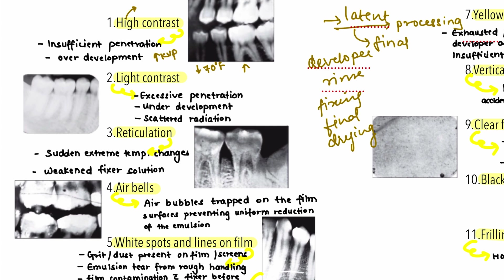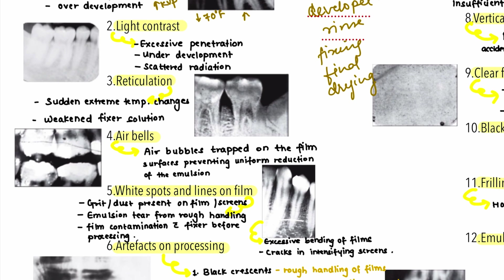The next radiographic error is reticulation — an orange peel appearance on the radiograph. It can be caused by sudden extreme temperature changes during processing, so you need to maintain a consistent processing temperature. If the fixer solution is weakened, that can also produce this orange peel appearance, and the correction is to replace the fixer solution.